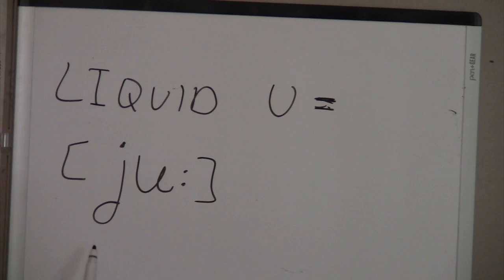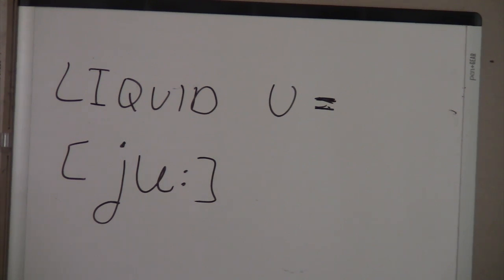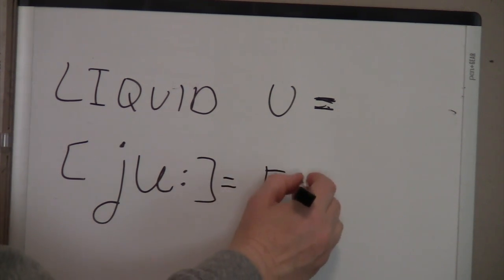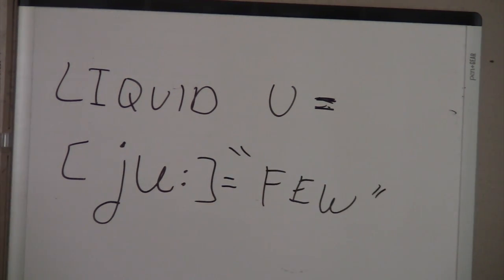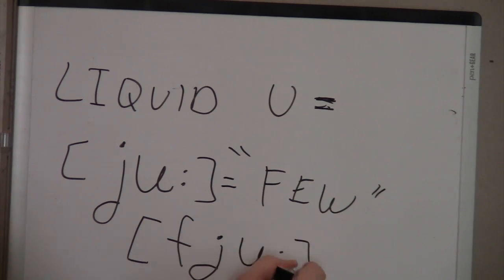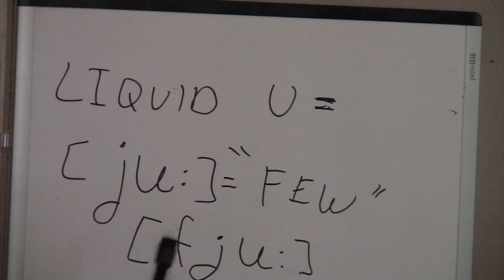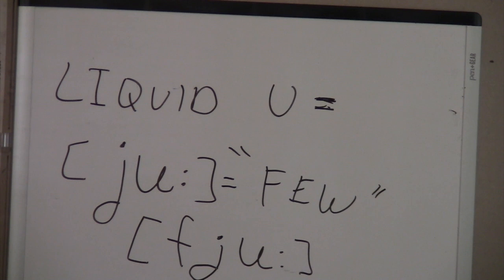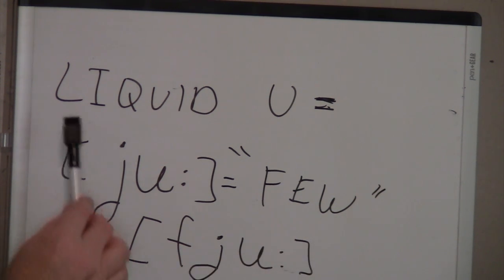There's one more term regarding the yuh sound: a liquid u. A liquid u makes the sound of yuh plus oo — the sound of y-o-u. You use this liquid u in words like 'few' — if you removed the yuh sound, it would sound like 'foo' instead. The liquid u is used in words like 'music,' 'computer,' 'Utah,' and 'view.'